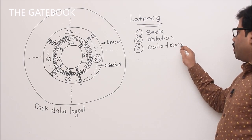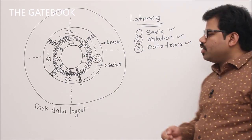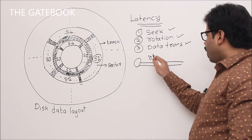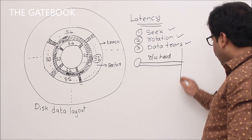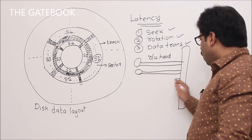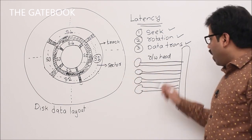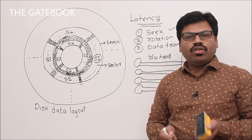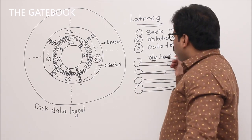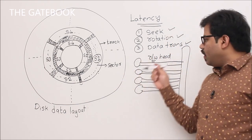To understand these delays, you must understand how data is stored. There is a read/write head for each plate. There is an actuator with various read/write heads — each head points to a particular plate. If you have four heads, you have four plates in the disk.